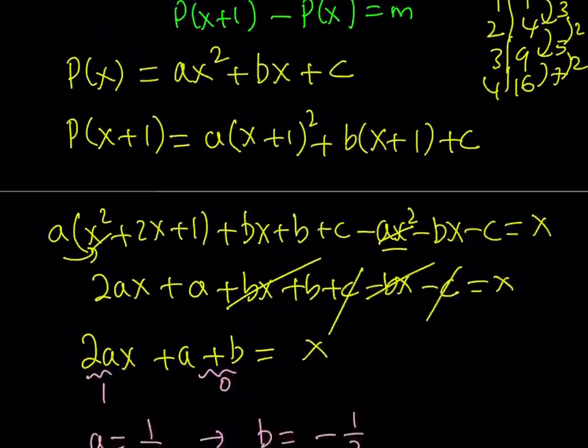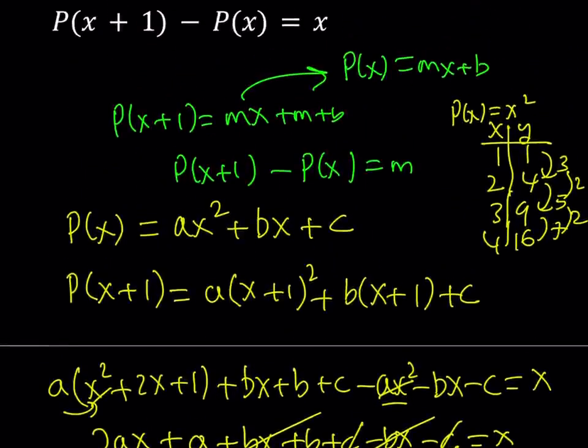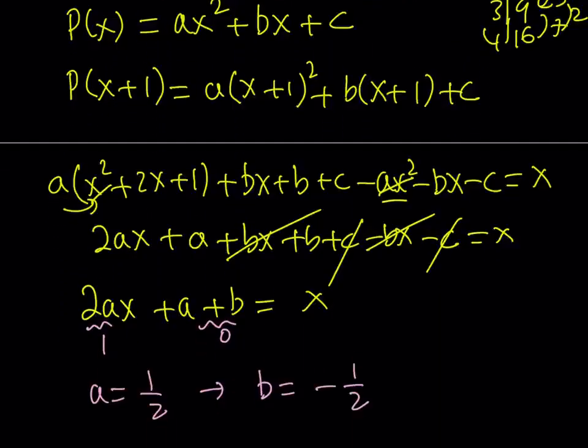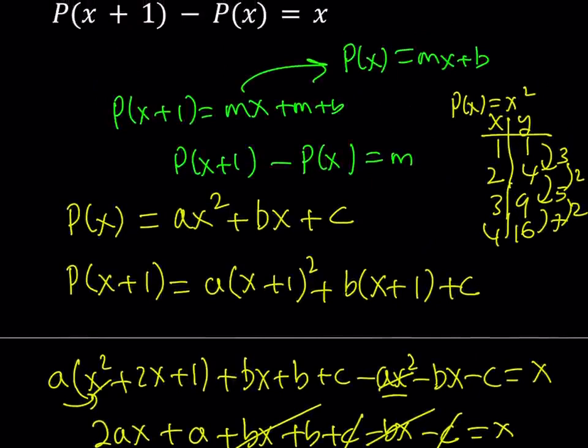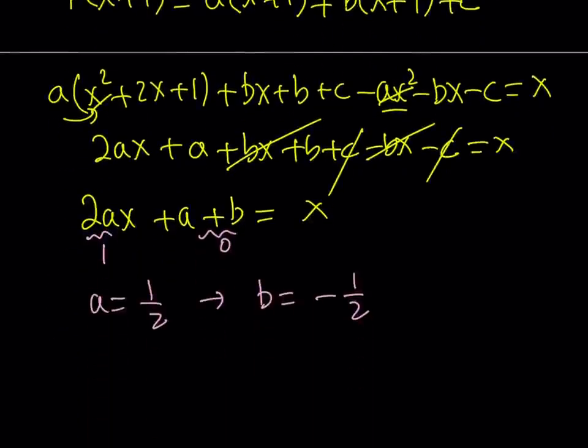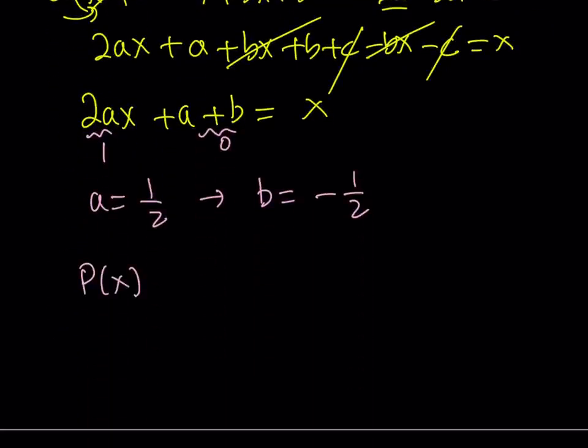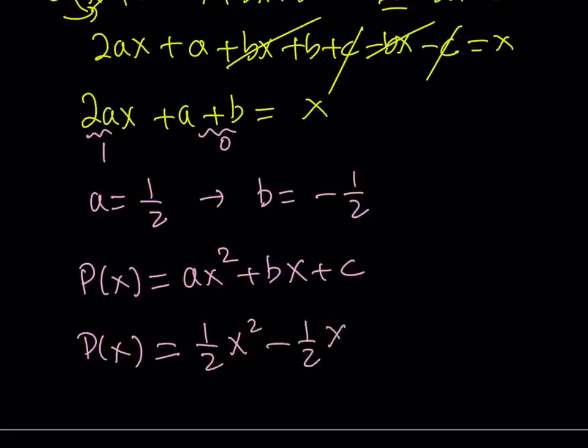But our goal is to solve for P of X. And we assume that P of X can be written as a quadratic. But notice that we don't really have any particular value for C here. We didn't get anything for C because C basically canceled out. What is that supposed to be? What that means is C can be anything. So let's go ahead and write this down. Remember, P of X can be written as AX squared plus BX plus C, and we didn't really get anything for C. So C can be anything. That's going to give me 1 half X squared minus 1 half X plus C.